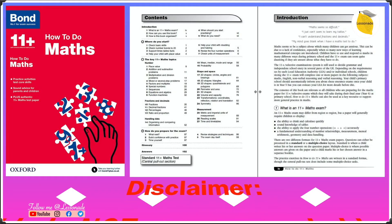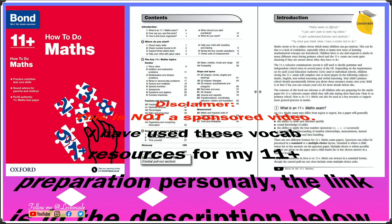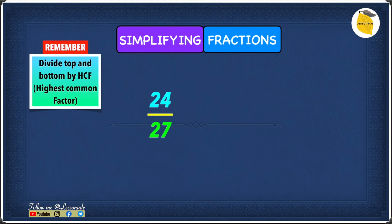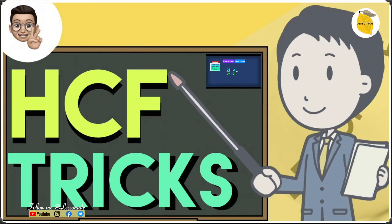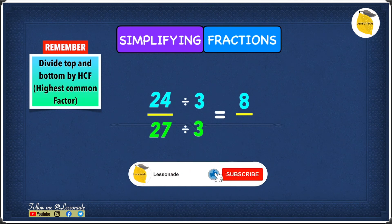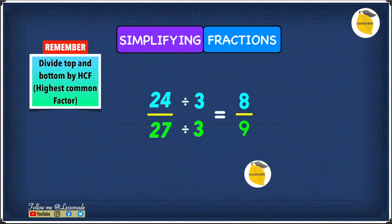If you want to know more on fractions, I've got a link in the description and comments below. Now let's see how to simplify the fraction 24 over 27. We once again have to divide the top and the bottom by the highest common factor. The HCF for both 24 and 27 is 3 — I've got a video on HCF so go check that out. 24 divided by 3 is 8, and 27 divided by 3 is 9, which means the simplified fraction of 24 over 27 is 8 over 9.